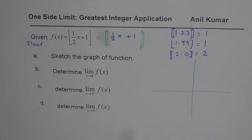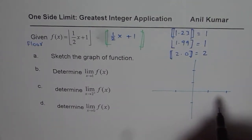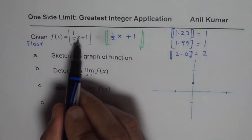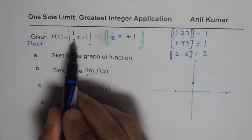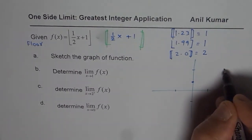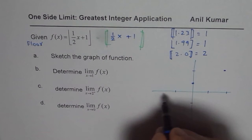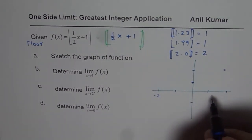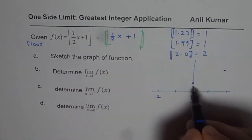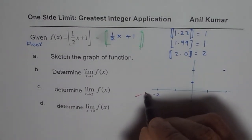For the benefit of students, I will first sketch this function and then answer the limits easily. Let's plot a graph. We mark 1, 2, and minus 1 on the axes. If I substitute x equals 0, I get 1 — so that is one point. If x equals 2, I get the value 2.